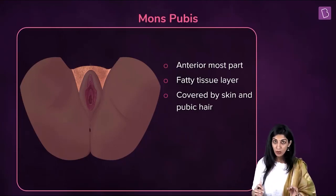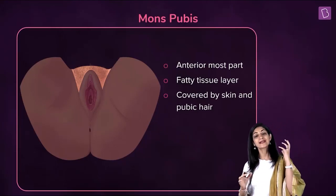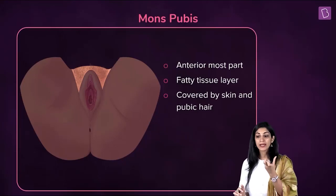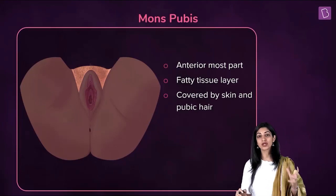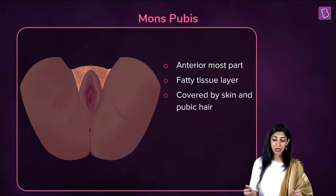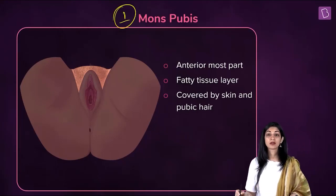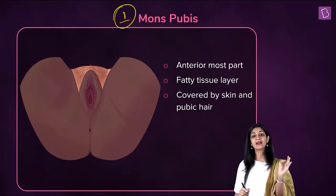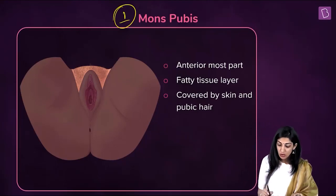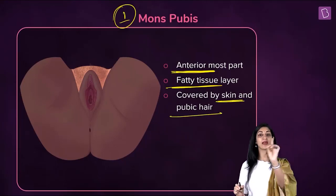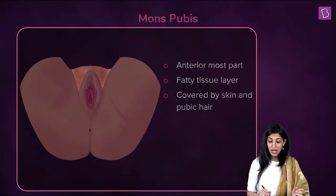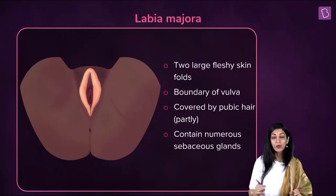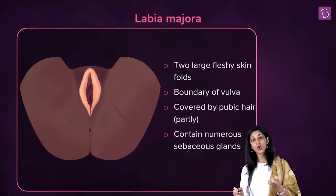The vulva is first of all surrounded by a cushiony layer of skin and pubic hair. Anteriorly, if you look at the external genitalia in a female, the first part you will encounter is the mons pubis. The mons pubis is nothing but a pad of skin — it is the anteriormost part, consisting of fatty tissue covered by skin and pubic hair. Perhaps it is designed this way for protection.